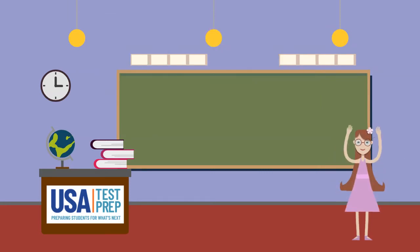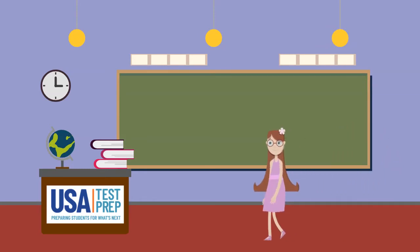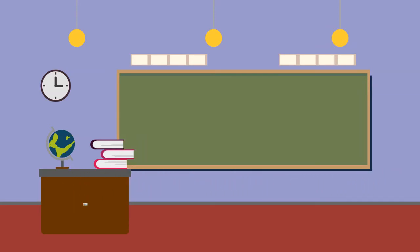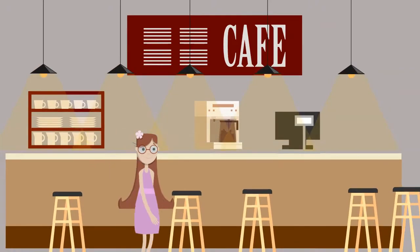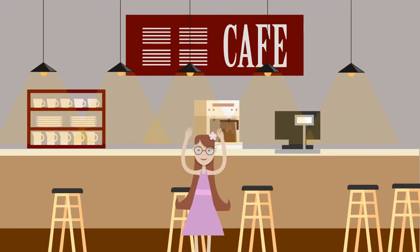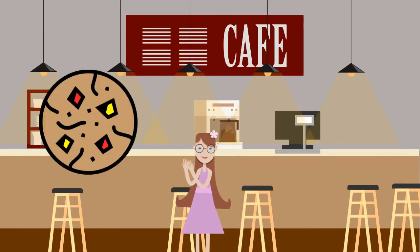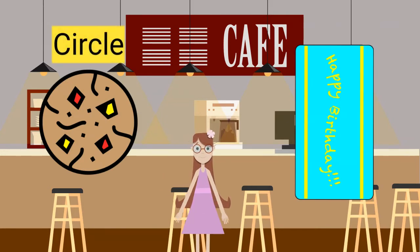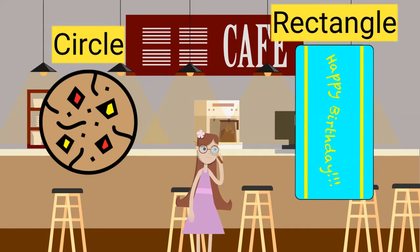Now that we know about shapes and partitioning, let's go to the coffee shop to learn more. We are at the coffee shop, where I can get a cookie or a piece of cake. The cookie is a circle, and the cake is a rectangle.